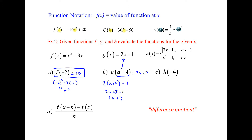On part c, we have h of negative four. This is a piecewise function, so you can only plug in negative four where the domain allows. The top piece applies to values less than or equal to negative one, and the bottom to values greater than negative one. Since negative four is less than negative one, we use the top piece: the absolute value of three times negative four plus one, which is the absolute value of negative 12 plus one, or the absolute value of negative 11, which equals 11.